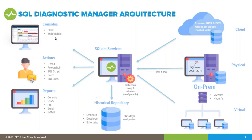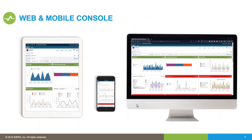The console is licensed per instance, so you can have as many consoles as you want. SSRS is useful for sharing reports with audiences who don't need full console access. In version 12.2, we also have a web and mobile console — a responsive website that adapts fluidly whether you're on a desktop, tablet, or phone.